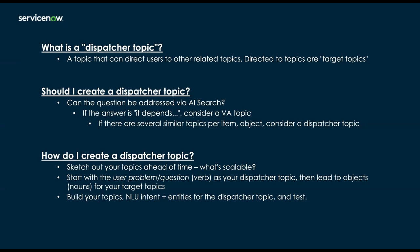So how do I create a dispatcher topic? At a high level: first, sketch out your topics ahead of time and figure out the most scalable approach. Start with the user problem as your dispatcher topic — in other words, the verb. You want to fix something, request something, solve or answer something. That's your dispatcher topic. Then that leads to objects or nouns for your target topics — different software like Adobe, Teams, WebEx, or hardware like Lenovo, IBM, or benefit packages like Fidelity, Morgan Stanley, UnitedHealth. Then you build out your NLU intent and entities for the dispatcher topic, and you test.